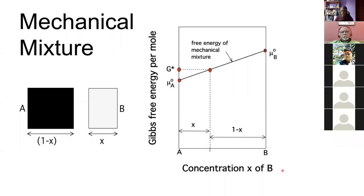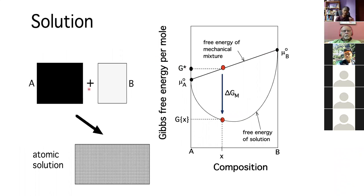To recap: if we have a large chunk of A and B in proportion (1−X) and X, the free energy of a mechanical mixture is simply a weighted mean of the pure component free energies. When we form a solid solution, there is a reduction in free energy because configurational entropy favors a random mixture. So the free energy of a solution differs from that of a mechanical mixture.